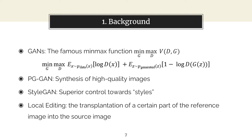Generative adversarial networks have evolved drastically over the years. Notable evolutions include PGGAN, which allows synthesis of high-quality images, and StyleGAN, which provides superior control towards something called styles. Local editing, which refers to the transplantation of a certain part of the reference image into the source image, is what this project is exploring.